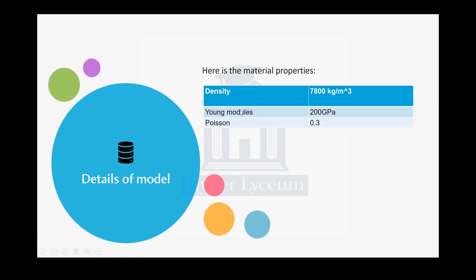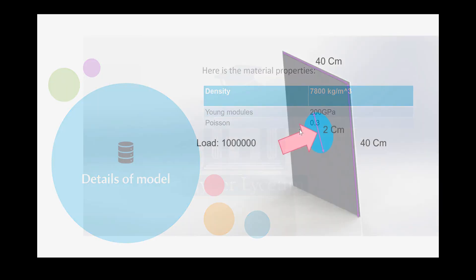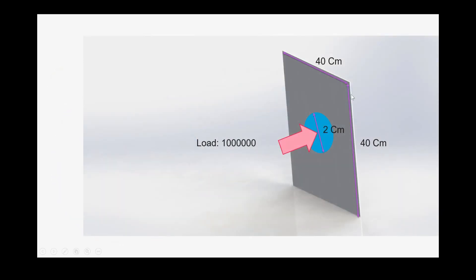About the model, we only need to define the Young's modulus. We're not going to define the plastic region, it's not important here. The density is about 7800 kg/m³, the Young's modulus is about 200 GPa, and the Poisson's ratio is 0.3. The geometry has lengths and widths of 40 cm and the radius of the area we want to apply the load on is 2 cm, so we just need to apply the load in the circular part of the plate.